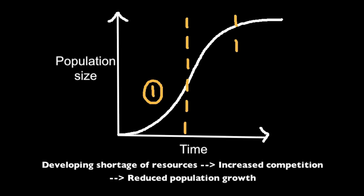During the transition phase, as a result of the increase in population size, there is a reduction in the availability of resources. This leads to an increased competition for the resources that do exist, and therefore a reduction in the rate of population increase, or the rate of population growth.